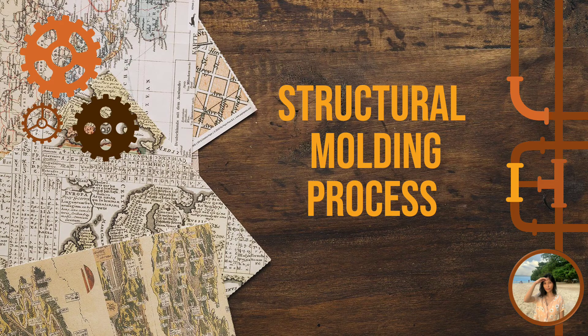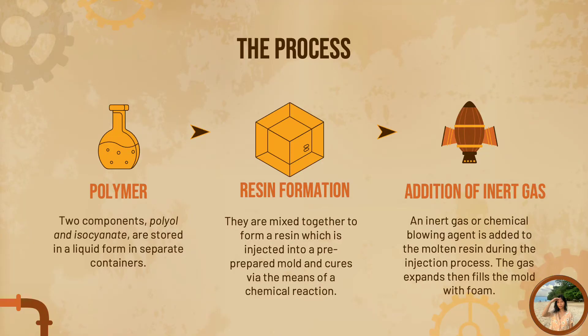Let's now proceed to the structural foam molding process. How are structural foams formed? The process is actually very similar to the traditional method of reaction injection molding. It begins by storing two liquid components — polyol and isocyanate — in separate containers. They are then mixed together to form a resin, which is injected into a pre-prepared mold and cures through means of a chemical reaction.